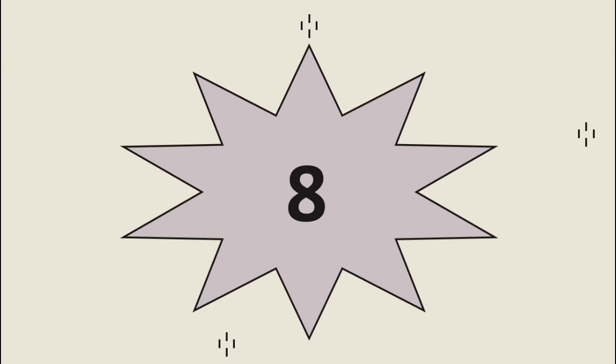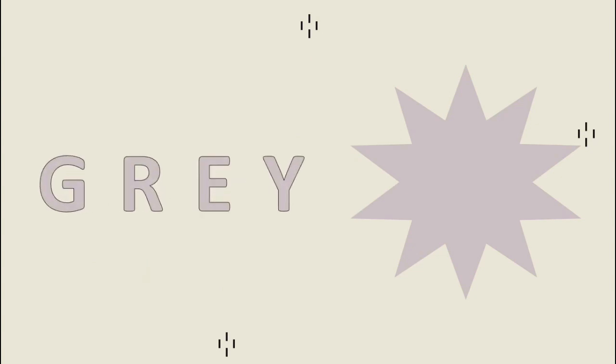Now we go to number eight. Warnanya adalah warna abu-abu. Kira-kira warna abu-abu apa ya? Abu-abu namanya adalah gray. So bagaimana spell the gray? We have G, R, E, and Y. Gray. Jadi abu-abu bahasa Inggrisnya adalah gray.